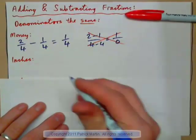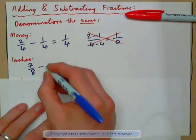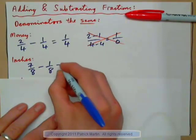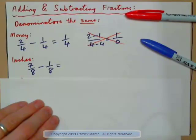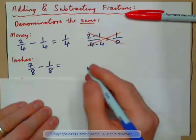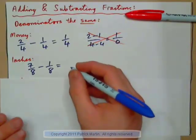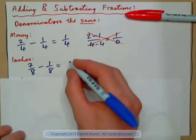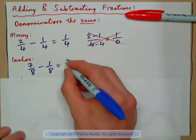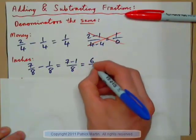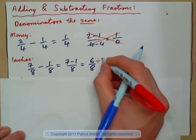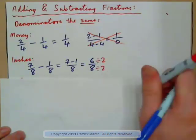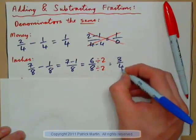Let's have a look at inches. 7 eighths of an inch subtract 1 eighth of an inch — write down the answer. If a piece of wood is 7 eighths long and you want to plane off 1 eighth of an inch, what are you going to be left with? That would be 7 minus 1 over 8 — 6 eighths. And we can put that in lowest terms: divide the top by 2, divide the bottom by 2, and we get 3 quarters.